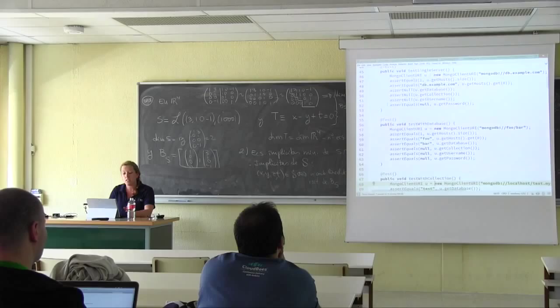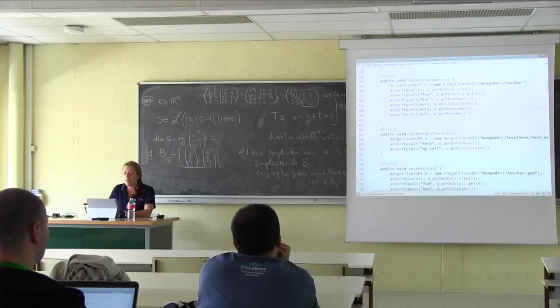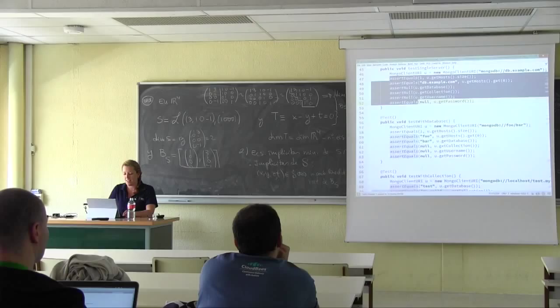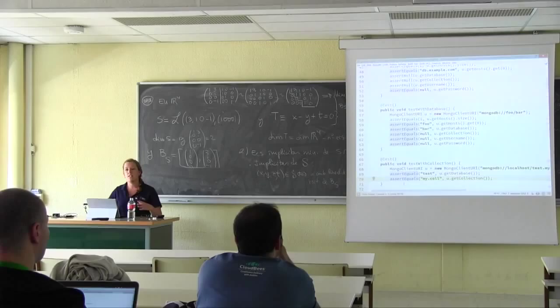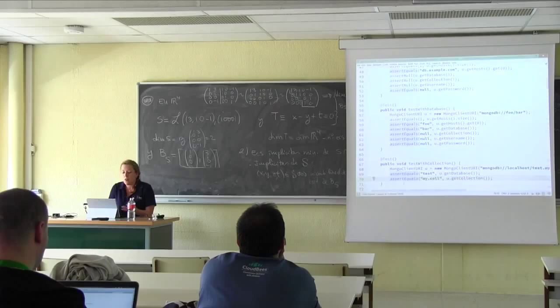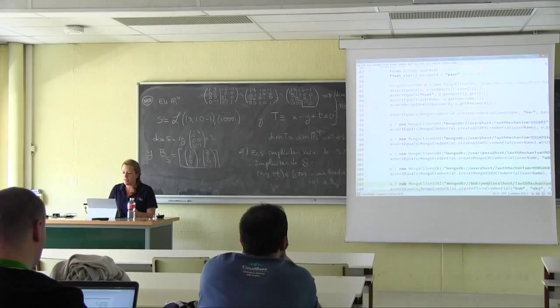This is very common in JUnit and it's not bad practice: I'm testing a URI of a single server, a URI which takes a database, a URI which takes a collection. At least I have separate tests testing different aspects, and that's fine. But then later on, apparently we got fed up of writing separate tests for individual things, so we just put it all in one test.